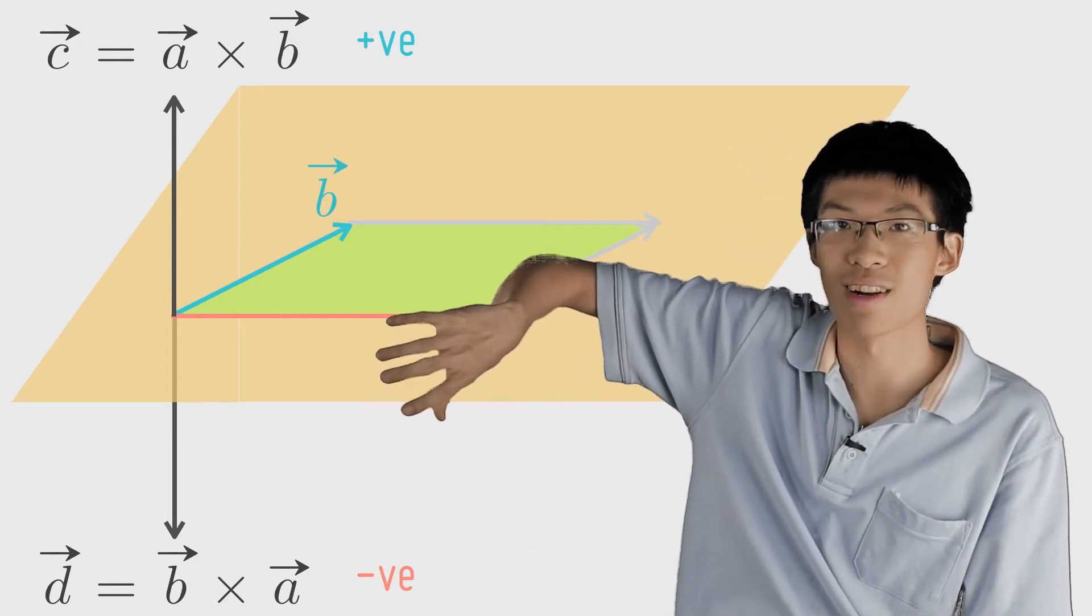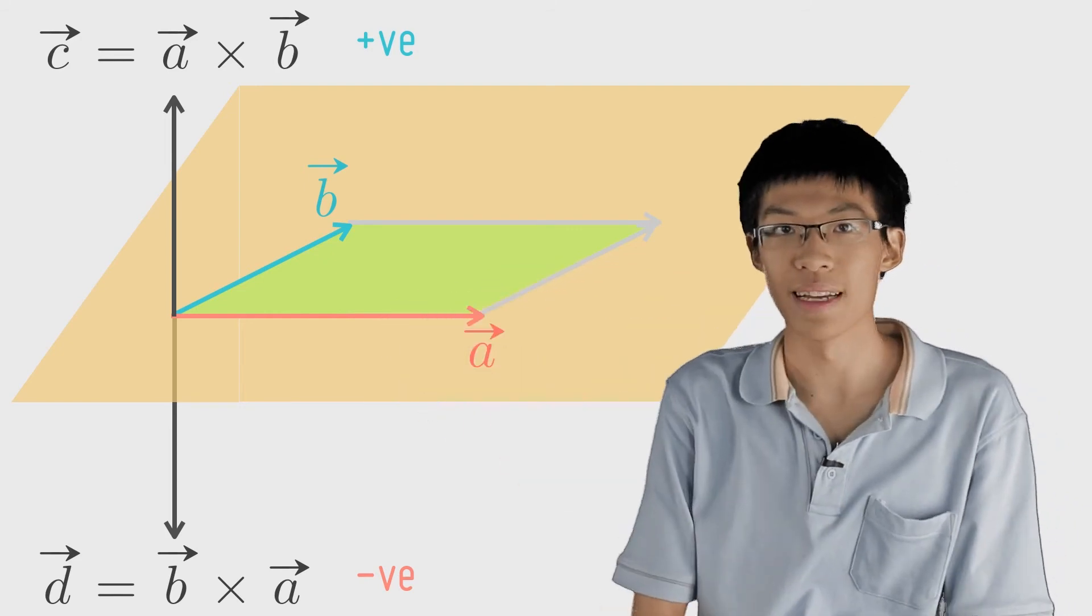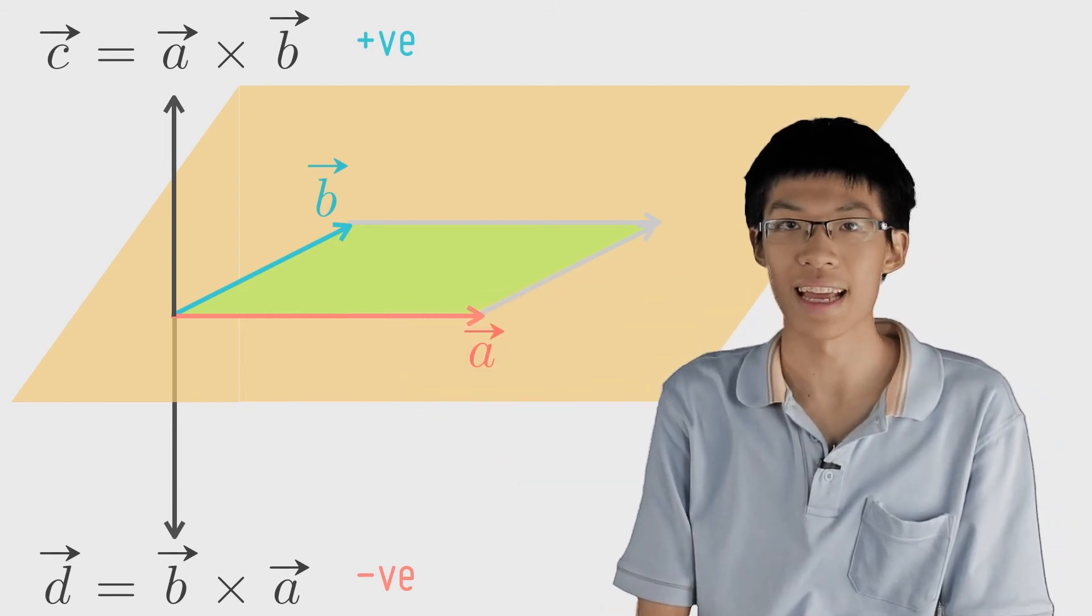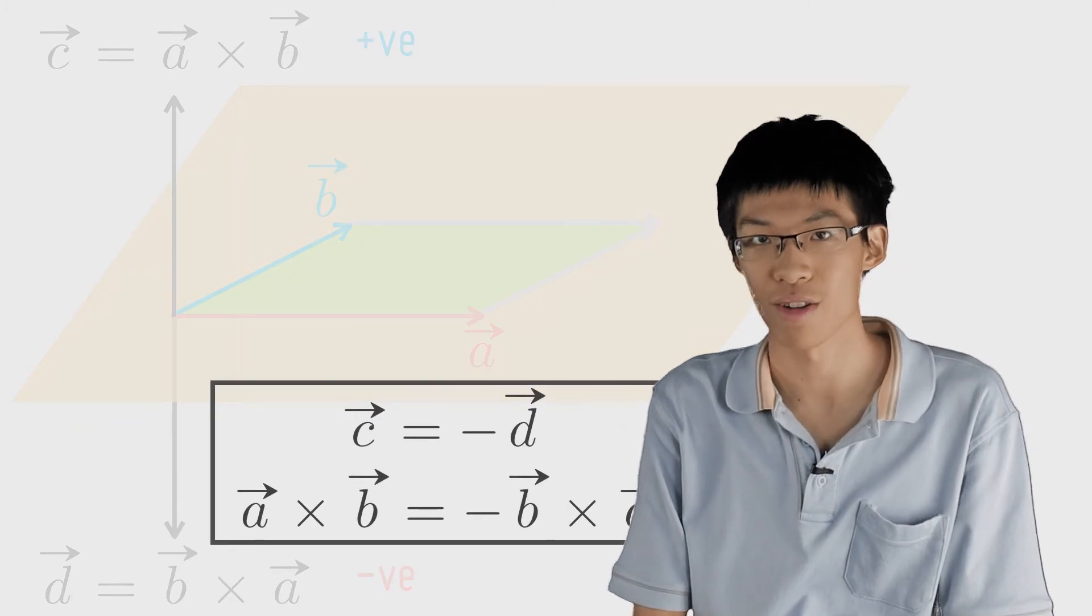So that's why b cross a points downwards. From this diagram, it's also easy to observe that a cross b is equal to negative b cross a.